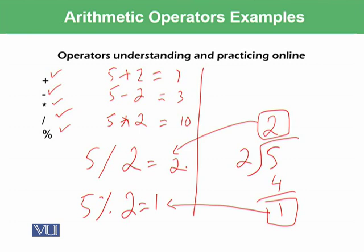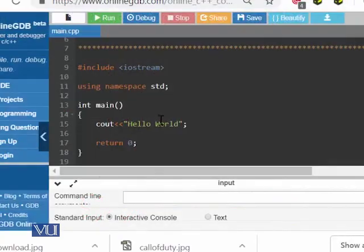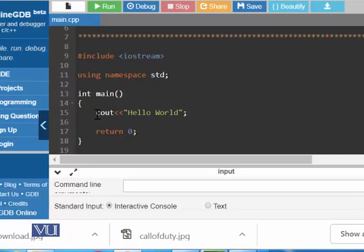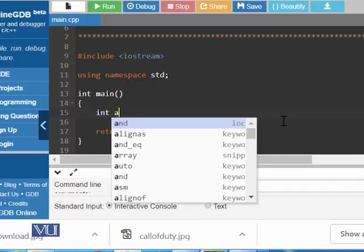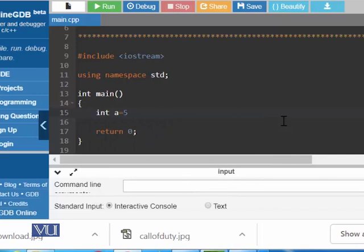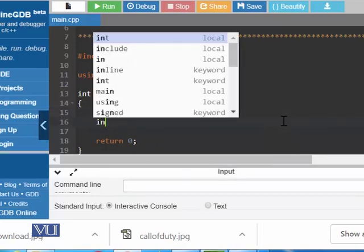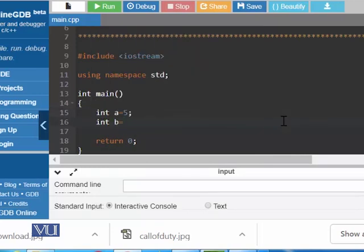So we have the compiler over here. Int a is assigned 5 and let us say int b is assigned 2.